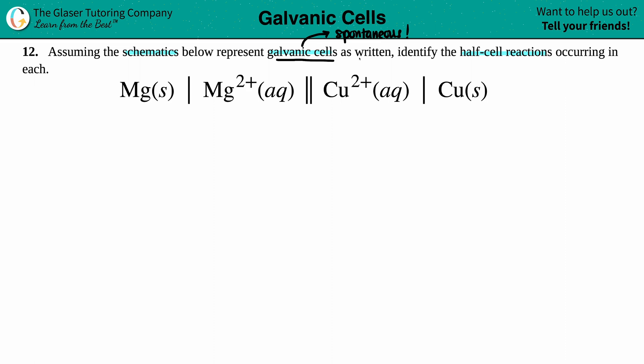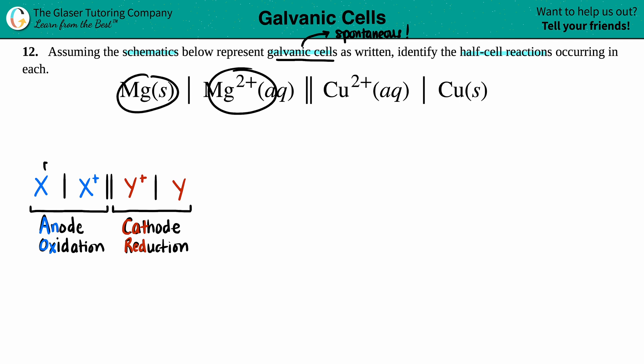In general, schematics will look like this, and let's give the generalities of it. Notice how they look very similar. I have one bracket between these two, one bracket between these two, one bracket between these two, and a double bracket right in the middle.